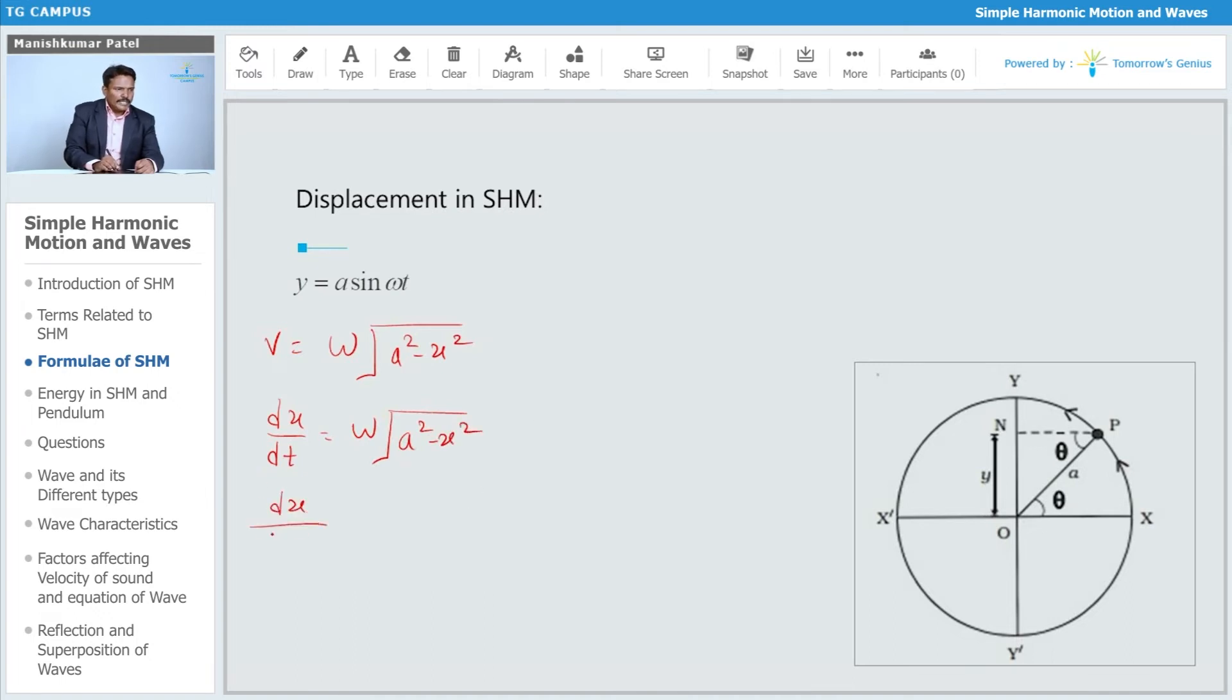This is dx upon square root of a square minus x square, multiply by omega dt. Just taking the integration on both sides, this is your sine inverse of x upon a equals omega t plus alpha.